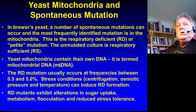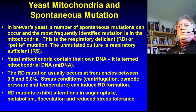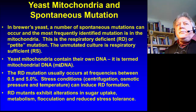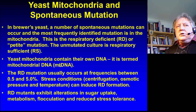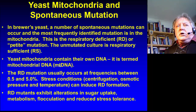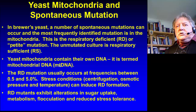Mutation in yeast can occur spontaneously and most frequently in the mitochondria. This is called a respiratory deficient, or petite mutation. The unmutated culture is respiratory sufficient — that's the wild type. Yeast mitochondria contain their own DNA, termed mitochondrial DNA, which is about 2% of the total DNA within the yeast — the other 98% is in the nucleus. The RD mutation occurs at a frequency between 0.5 and 5%. Stress conditions such as centrifugation, atmospheric pressure, and temperature can induce RD formation.